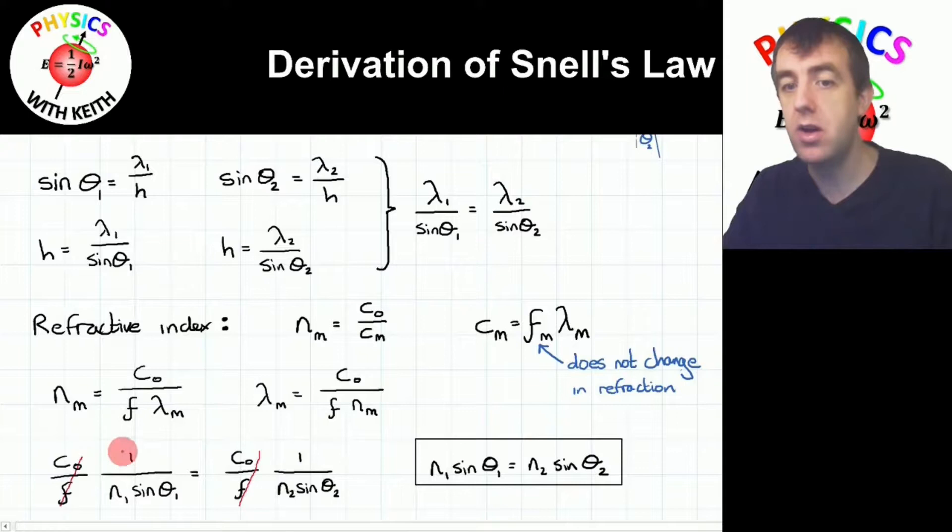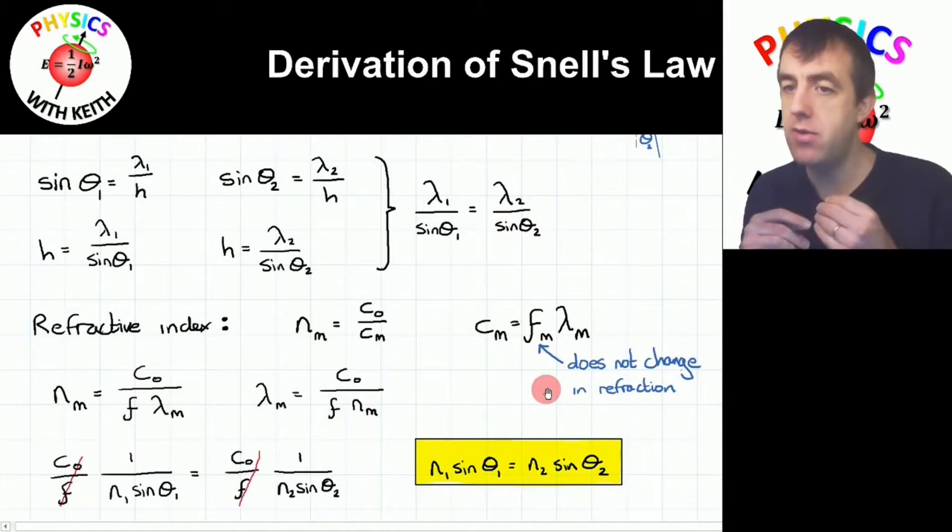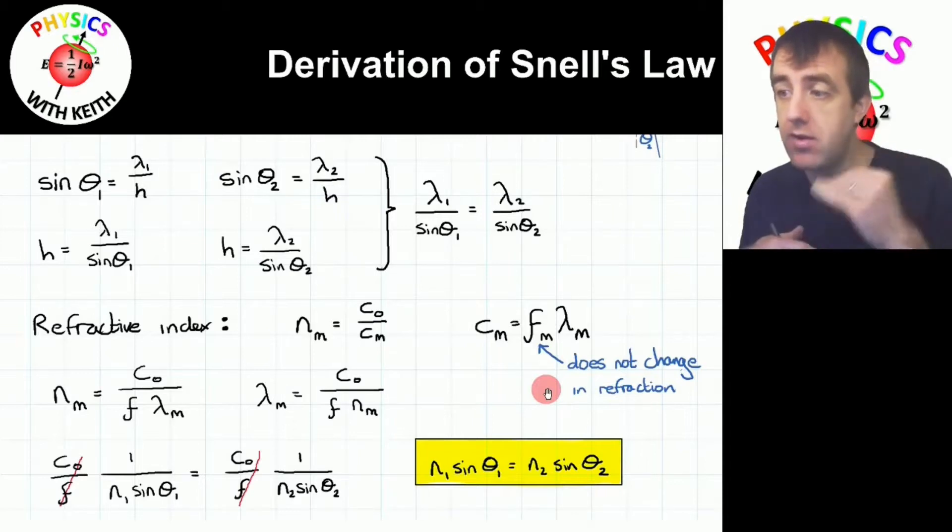This means that we can cancel out the C nought over F from both sides. If we take the reciprocal of the 1 over N1 sine theta 1 equals 1 over N2 sine theta 2 that we're left with, we arrive at the expression for Snell's law. This is a very special expression because it doesn't matter whether medium 1 is more dense than medium 2 or medium 1 is less dense than medium 2. This equation works either way around. So you don't have to keep track of whether or not you have refraction from a less dense to a more dense medium or vice versa. The equation can handle it either way.